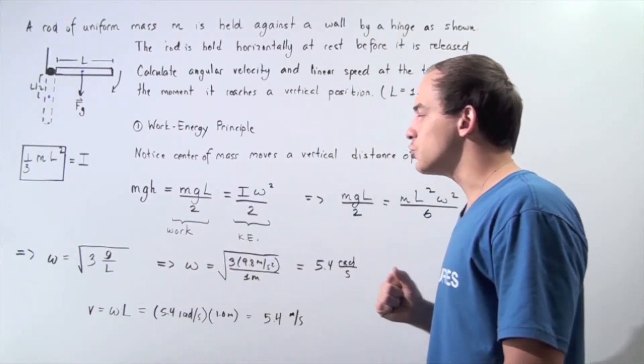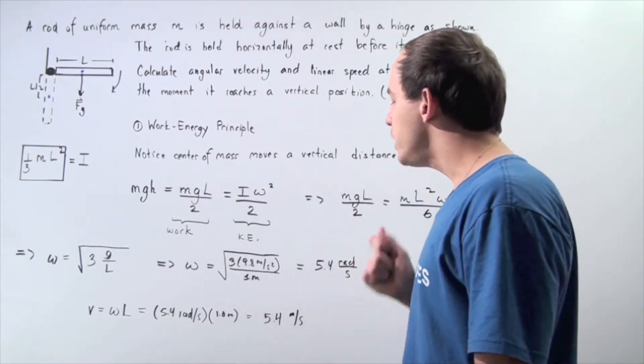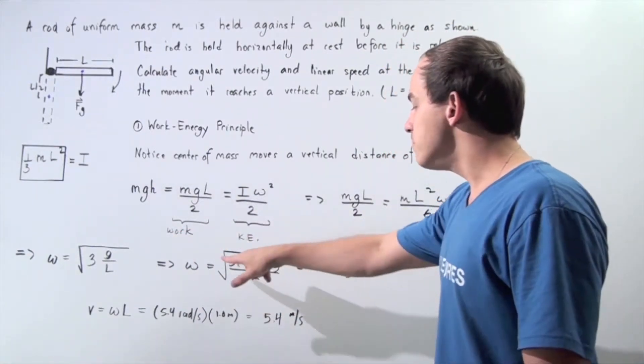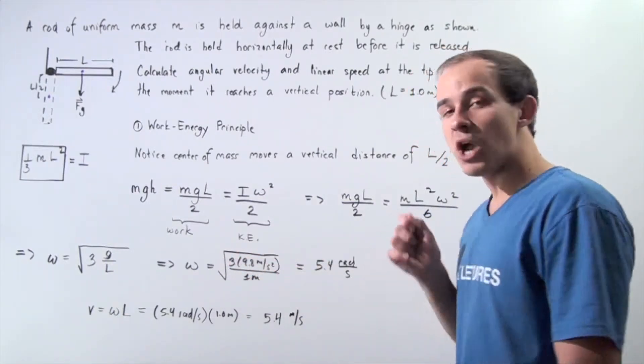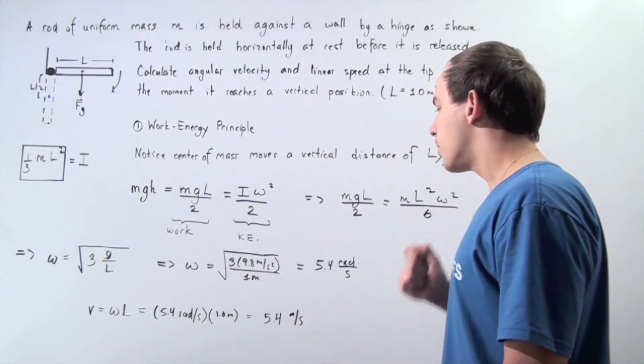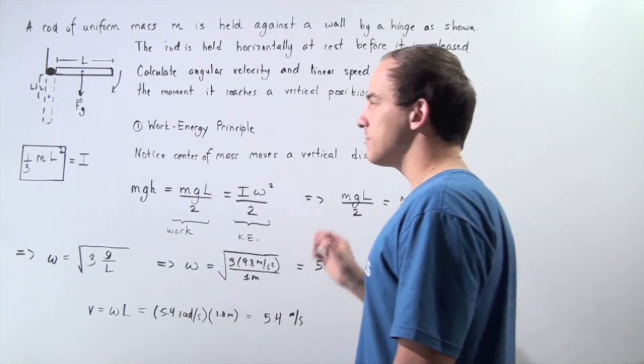We plug in our values. We know G is 9.8 meters per second squared, and L is simply 1 meter. We multiply and divide, take the square root, and get approximately 5.4 radians per second. So this is our angular velocity of the object.